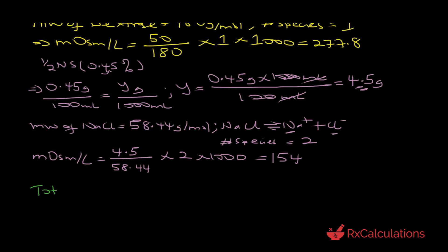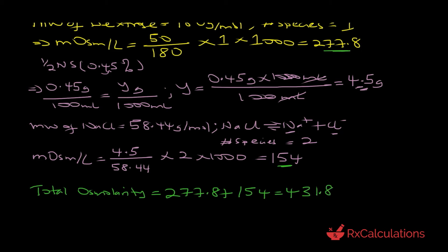The total osmolarity equals the dextrose 5% osmolarity plus the half normal saline osmolarity: 277.8 plus 154 equals 431.8. Rounding to the nearest whole number and not including units, the answer is 432.